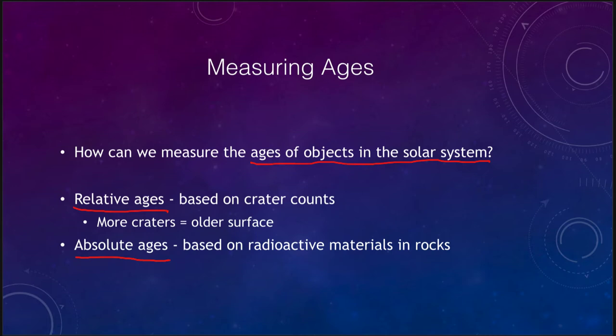If you see something cutting through a feature — for example, if you have a crater and some kind of fault or crack going through it — then that fault must have come later. So it tells you relatively how old things are.